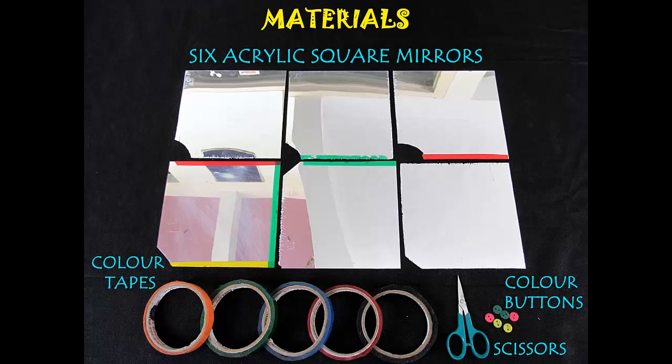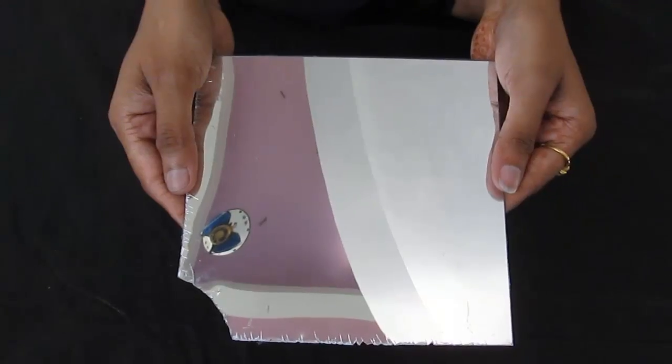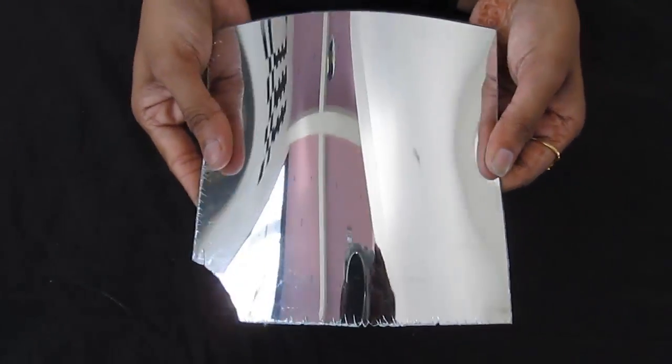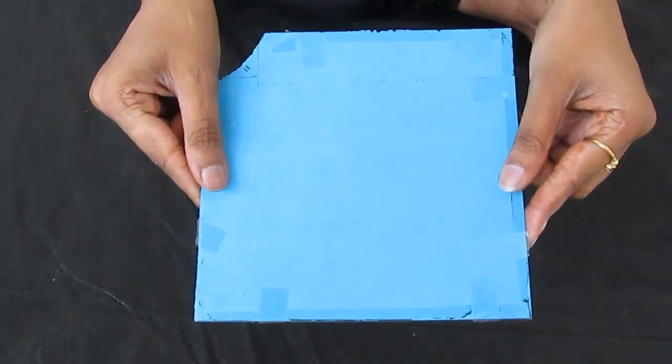All you need is six square pieces of acrylic glass. This is a reflecting glass and can be safely cut by a scissor. Now take six square pieces of this glass, six inch by six inch. If you take smaller, your cube will be a little smaller.